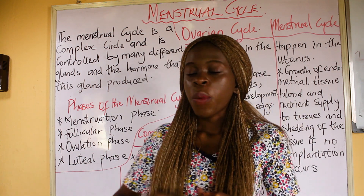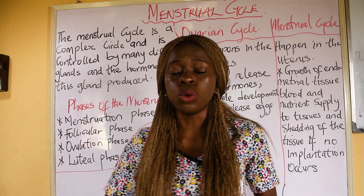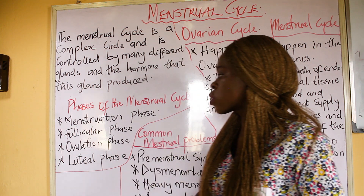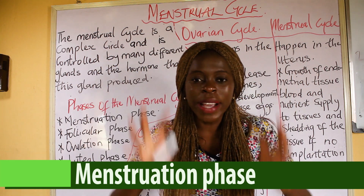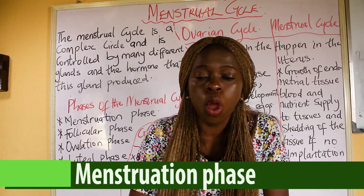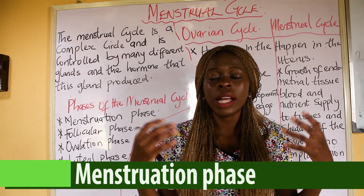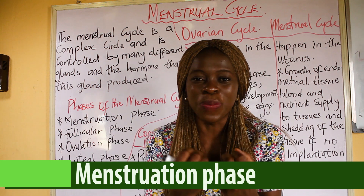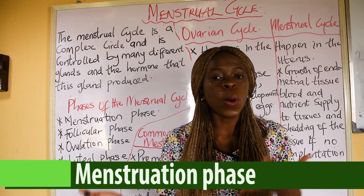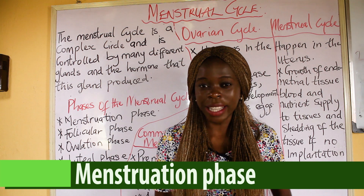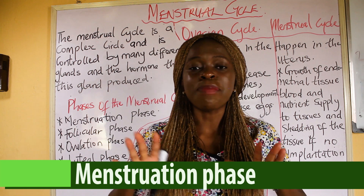We have the Menstruation Phase, the Follicular Phase, the Ovulation Phase, and the Luteal Phase. Let's talk about the Menstruation Phase first. As the name implies, it simply means your menses — the point in time where the menses comes out as blood. During this period, ladies use either pads or tampons to absorb the blood and allow comfortable movement. Whenever you hear the Menstruation Phase, it is simply the period where the menses comes out.